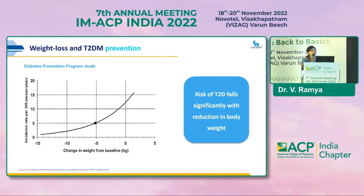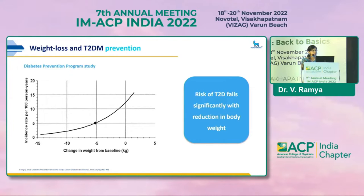One landmark trial is the Diabetes Prevention Program study. In this study, people in borderline diabetes were randomized into two groups: intensive lifestyle intervention and metformin. At the end of the study, intensive lifestyle intervention showed a decrease in the incidence of diabetes by 58%, whereas metformin showed only 38%. This study clearly showed a direct correlation between significant decrease in weight and decrease in the incidence of diabetes — with progressive weight loss, there is a proportional decrease in diabetes incidence.